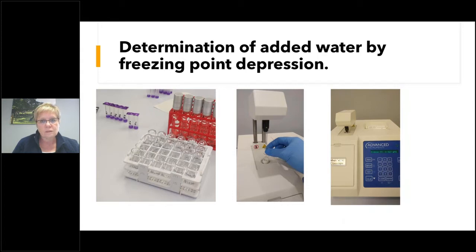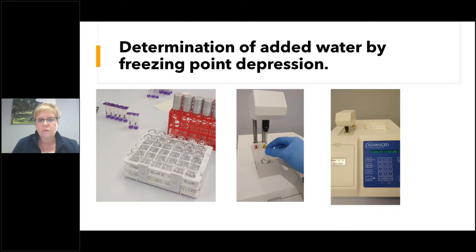The determination of the freezing point test is done like this: you use a little cryoscope sample tube, add two milliliters of milk, insert the tube into the instrument, switch the instrument on, the head goes down into the sample, the sample is supercooled, and a reading is given.